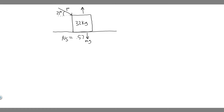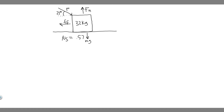We also have a normal force because the floor is touching this object. And then we're also going to have the force of friction because we know the coefficient of static friction is 0.57. There's going to be some force of friction going in the opposite direction of where we're trying to push it. So what we're trying to do is solve for the force F — F is the unknown.